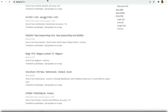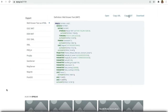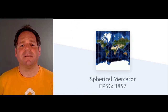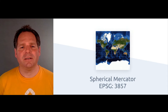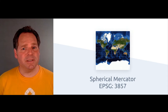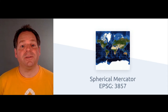So what does this all mean? Well, we know the Earth isn't flat, but our maps are, all thanks to the mathematical process called projection. The most common projection used for web maps is spherical Mercator, which is identified in the map industry by the EPSG code 3857.